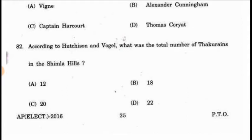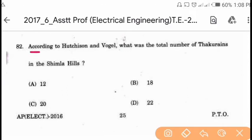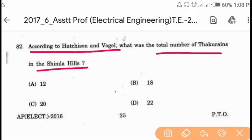According to Hutchinson and Vogel, the total number of Thakurais in Shimla Hills is 20.